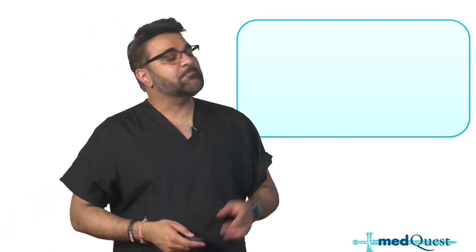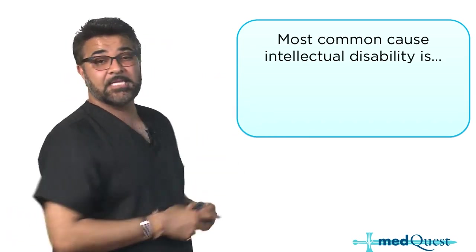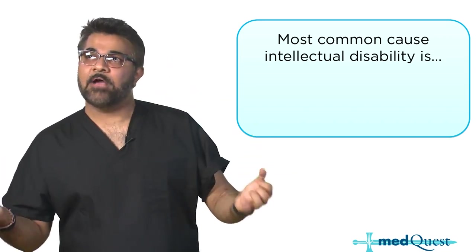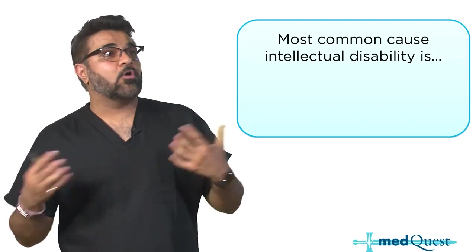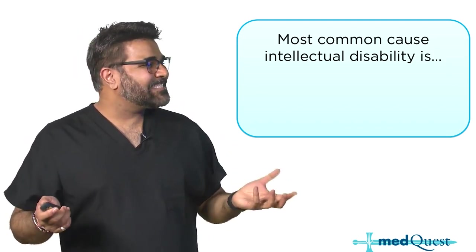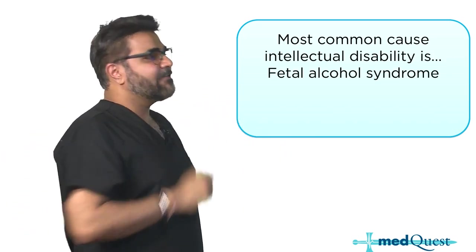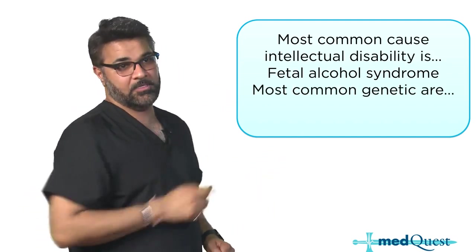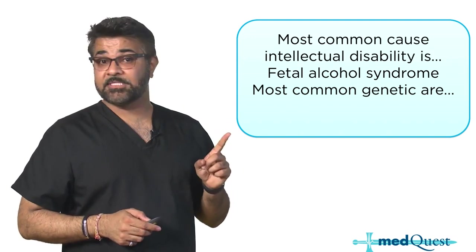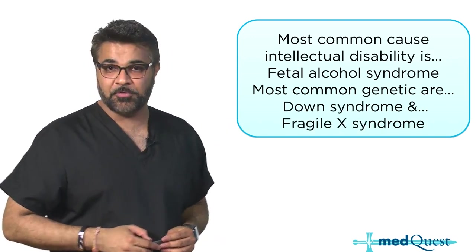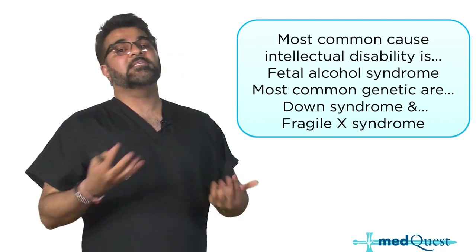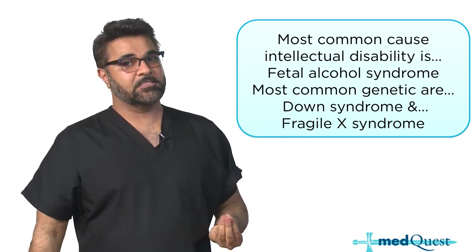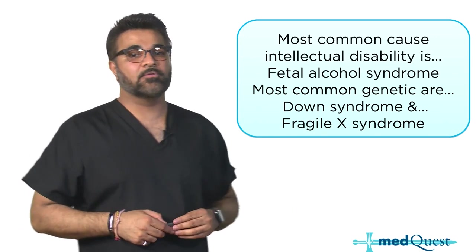The most common cause of intellectual disability in the United States is fetal alcohol syndrome - not Down syndrome or Fragile X. But if they ask what the most common genetic cause is, there are two: Down syndrome and Fragile X syndrome. So the most common overall cause is an acquired thing through fetal alcohol syndrome, but the genetic causes not from exposures are Down syndrome and Fragile X.